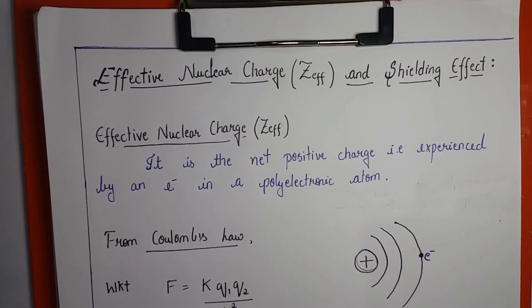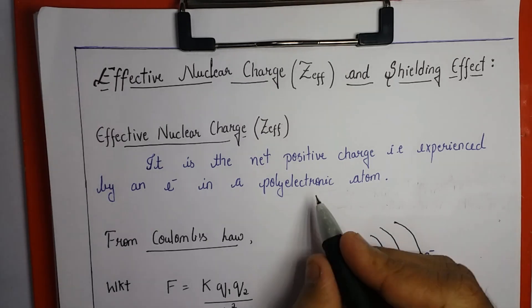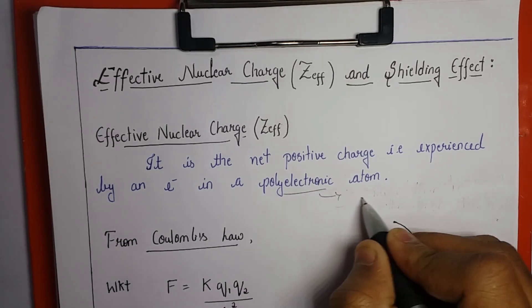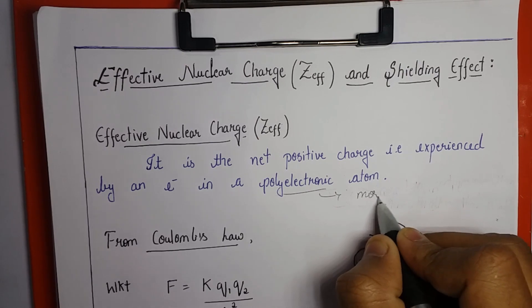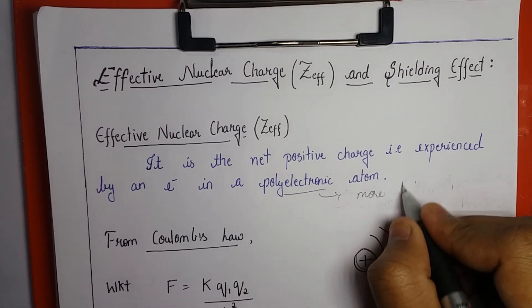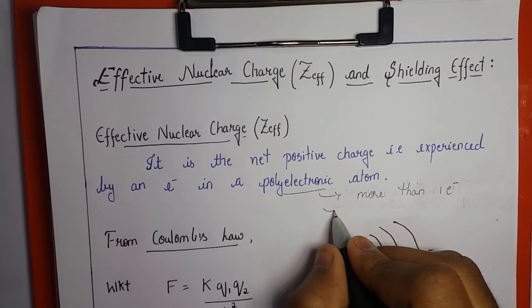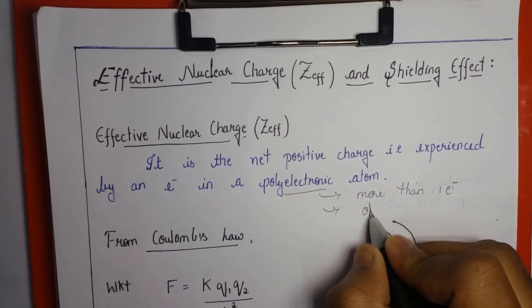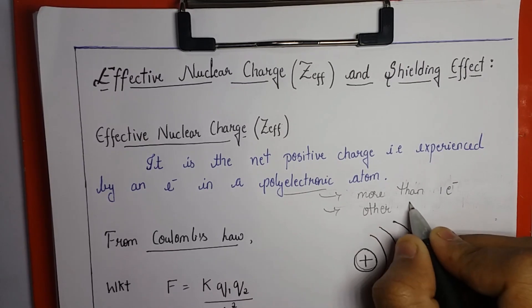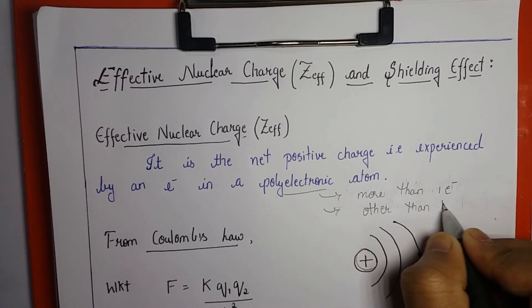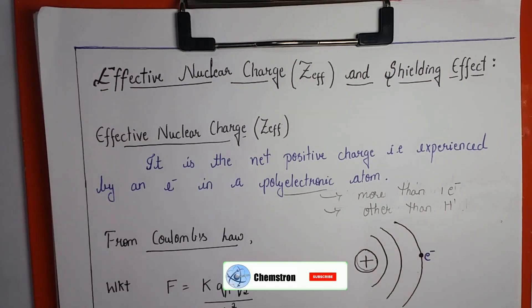Effective nuclear charge is defined as the net positive charge experienced by an electron in a polyelectronic atom. A polyelectronic atom is an atom containing more than one electron, or may also be defined as any atom other than hydrogen.